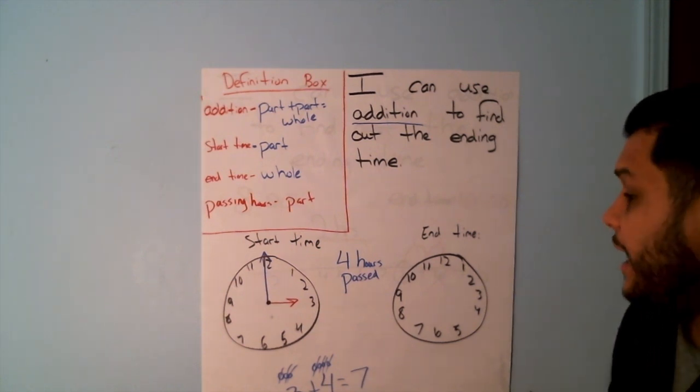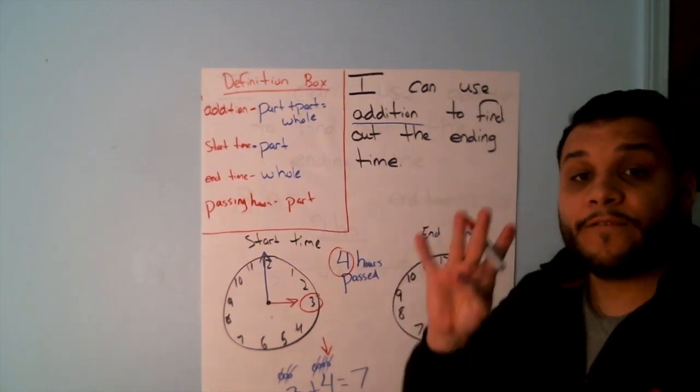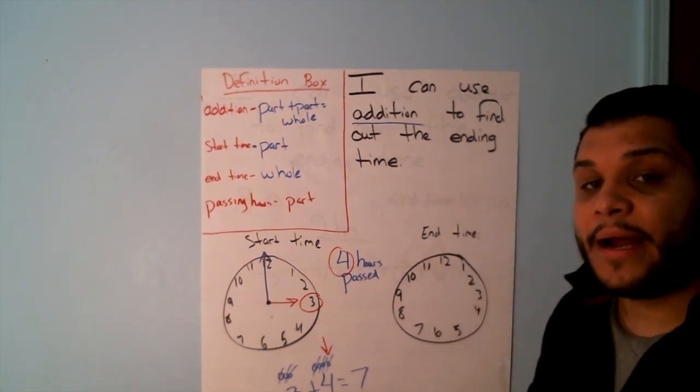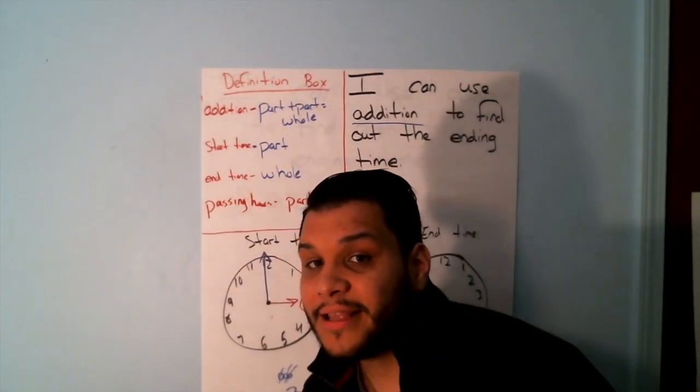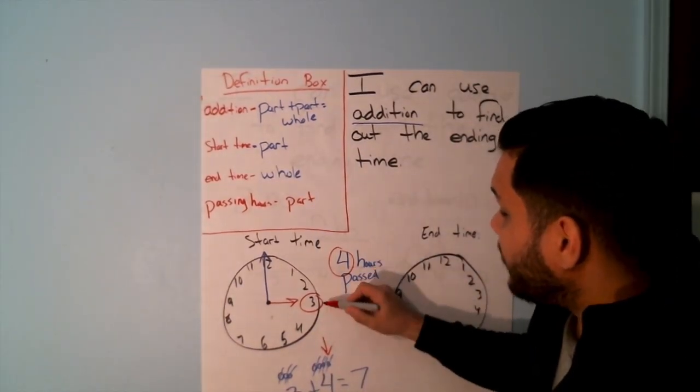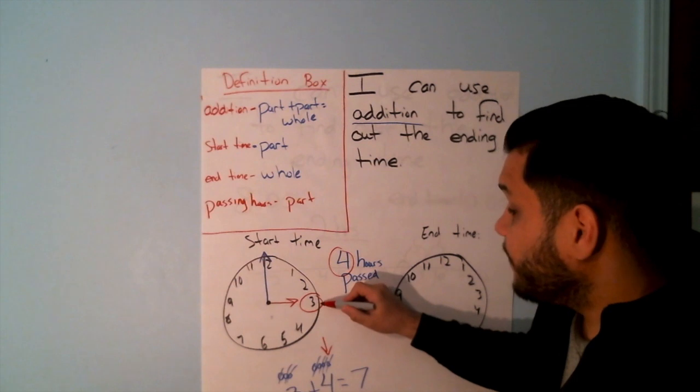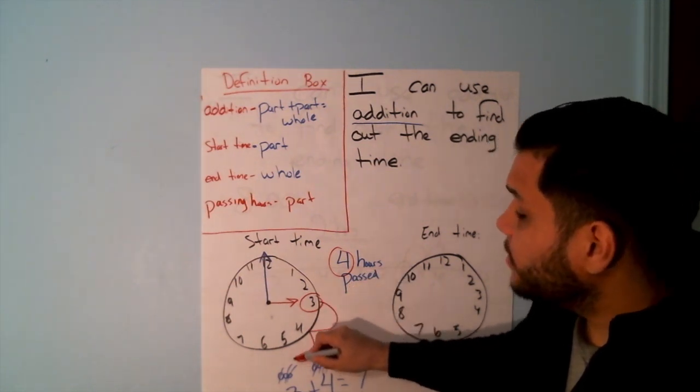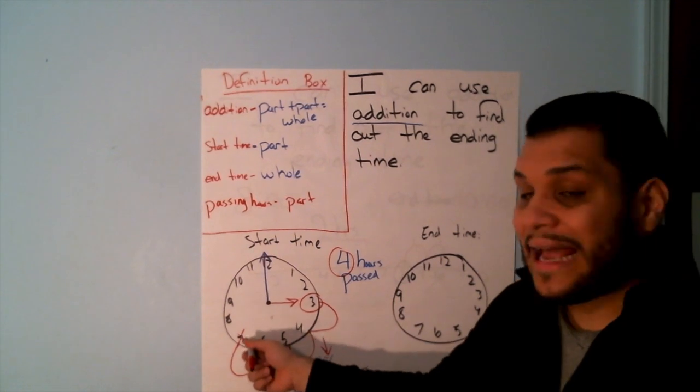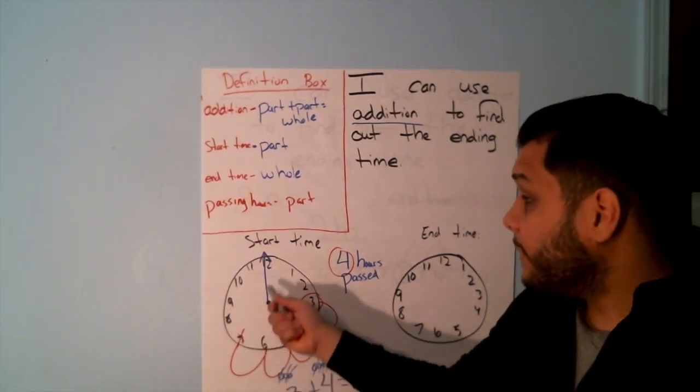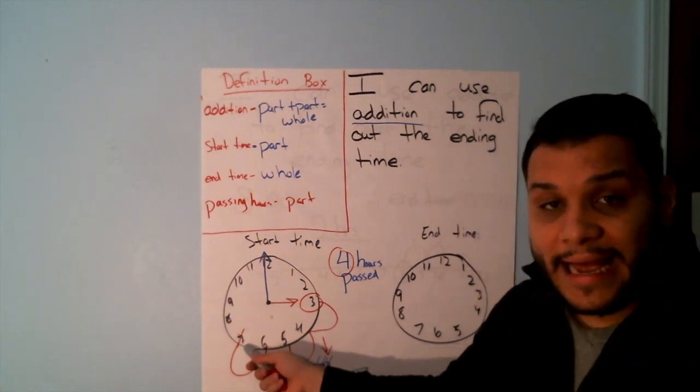Well, I know that I'm starting at 3 o'clock. I know that I should move, yes, 4 more spaces. Because I'm adding, am I going to go forward or am I going to go backwards? Yes, I'm going to go forward. So I'll start at 3 and I'll count 4 more spaces. We never count the number we start at as 1. That is 0. So let's move forward. We have 1, 2, 3, 4. My ending time was at 7. So I will say that my start time is at 3. If 4 hours have passed, now it is, yes, 7 o'clock.